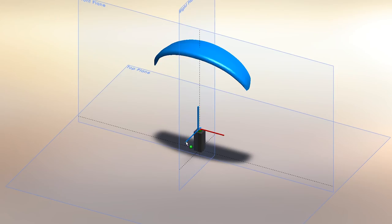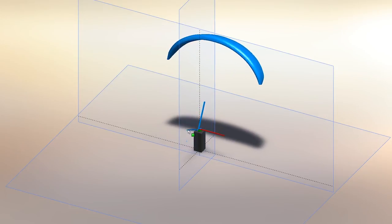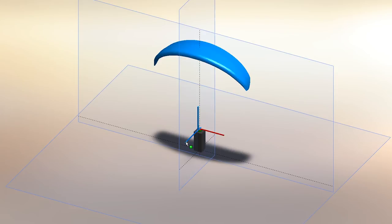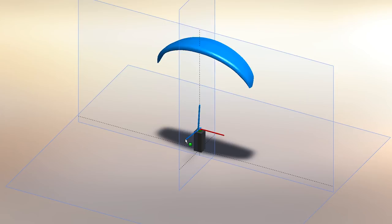When the brakes are pulled symmetrically the wing pitches back, when released it pitches forward. To keep the wing above you and avoid a frontal collapse you may have to keep a little bit of brake on both sides.